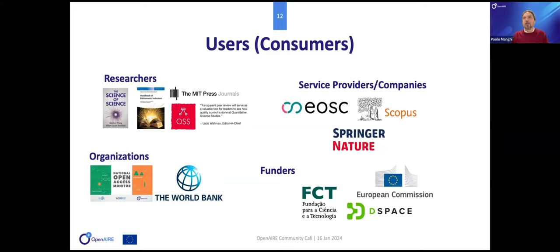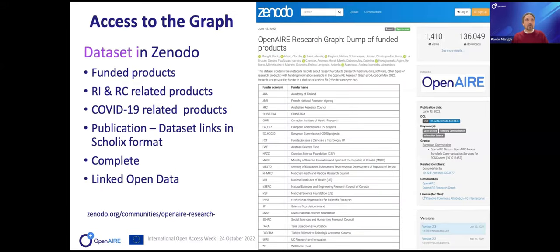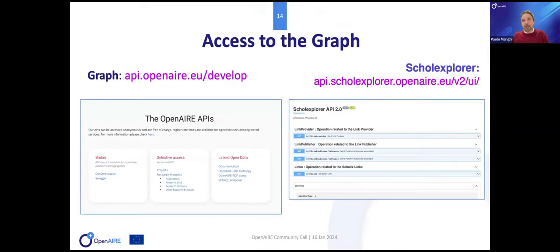We also have organizations like countries and universities using the data for monitoring, as I will show with the Ireland example. Access to the graph is through datasets in Zenodo — you can find a specific collection called Open AIRe Graph with different slices of the graph: the whole graph or subsets. Access is also available through APIs. You can go there, request the token, and access the APIs. We have documentation at graph.openaire.eu — information about the data model, properties, schemas, workflows, and all our scientific publications.